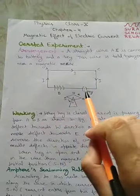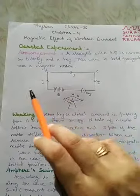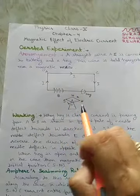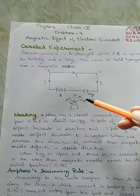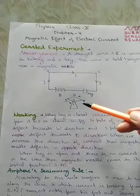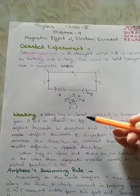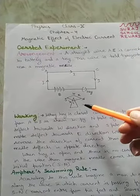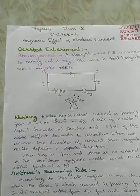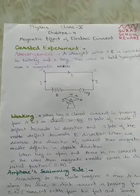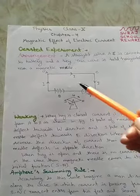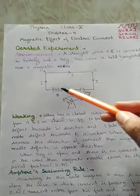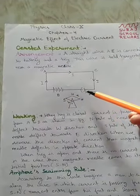This wire is held near a magnetic needle, connected with the help of a key. This magnetic needle indicates the direct north-south direction when it is placed freely. After this, in working, when we open the key...